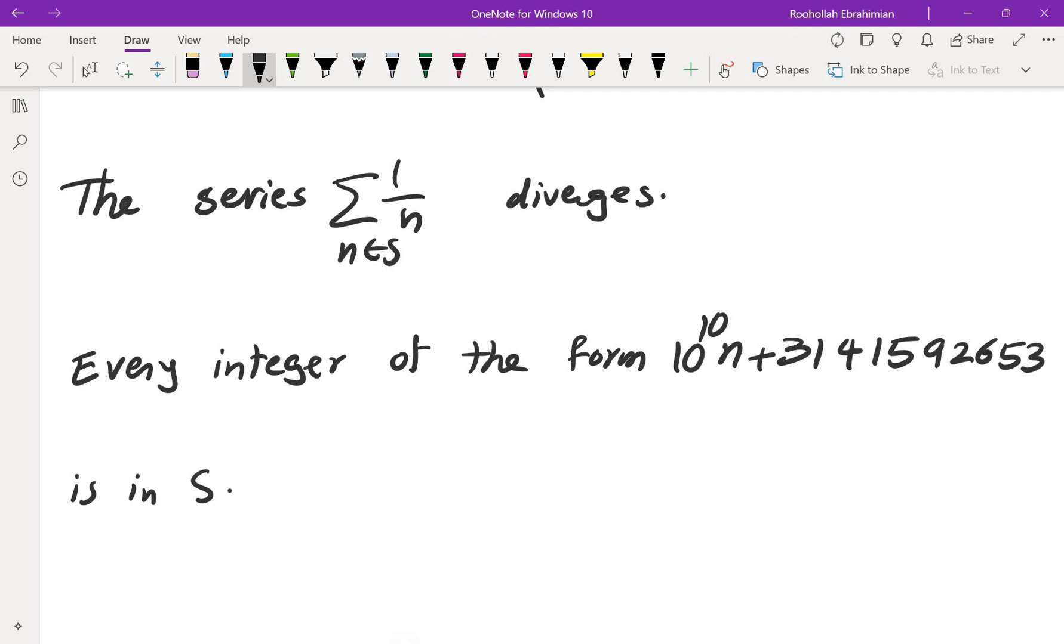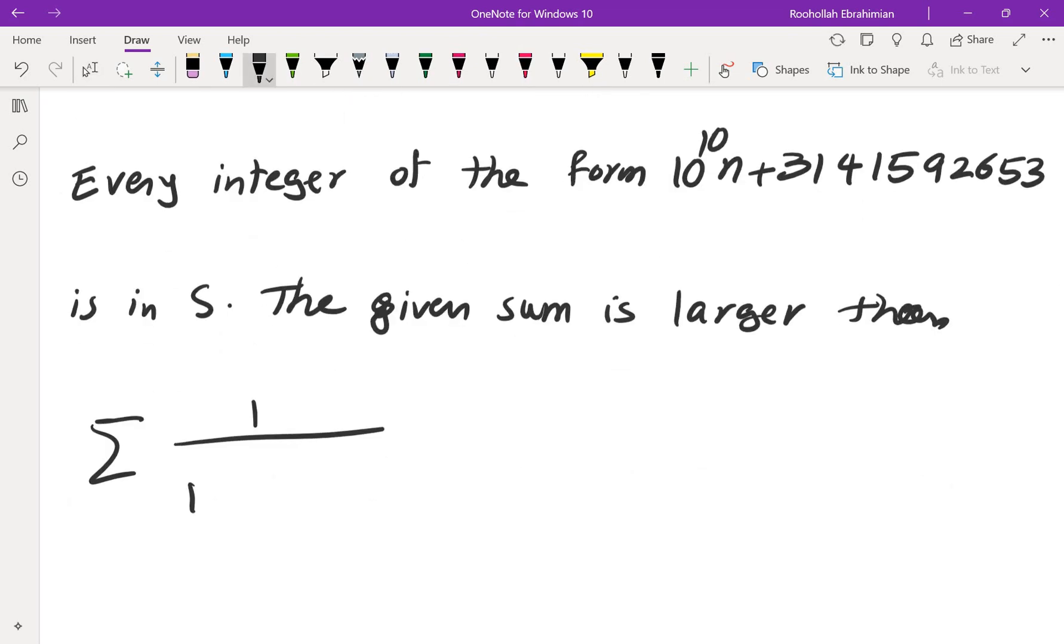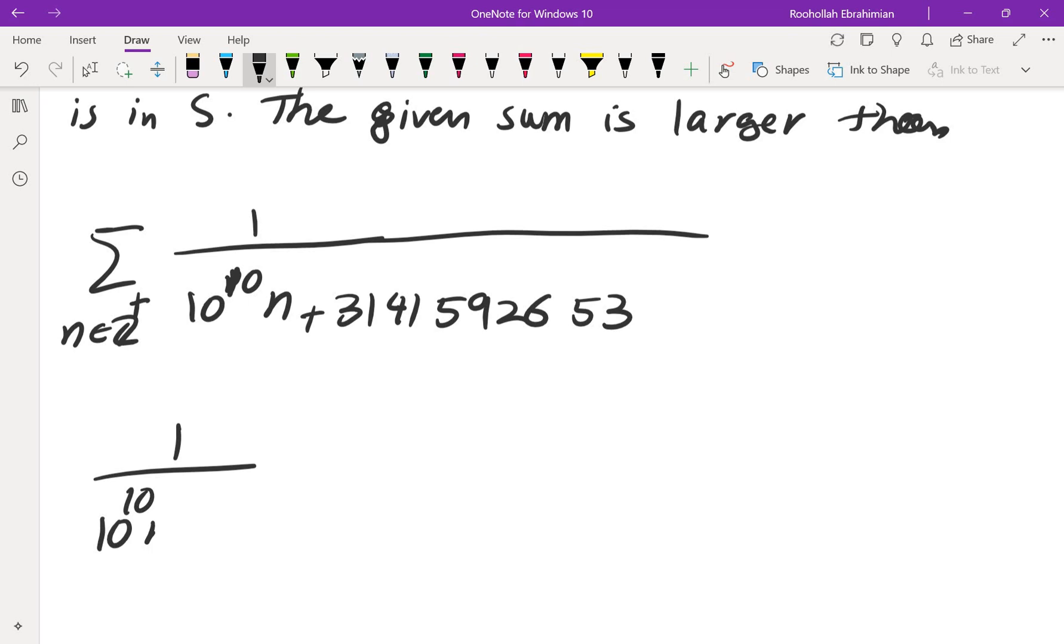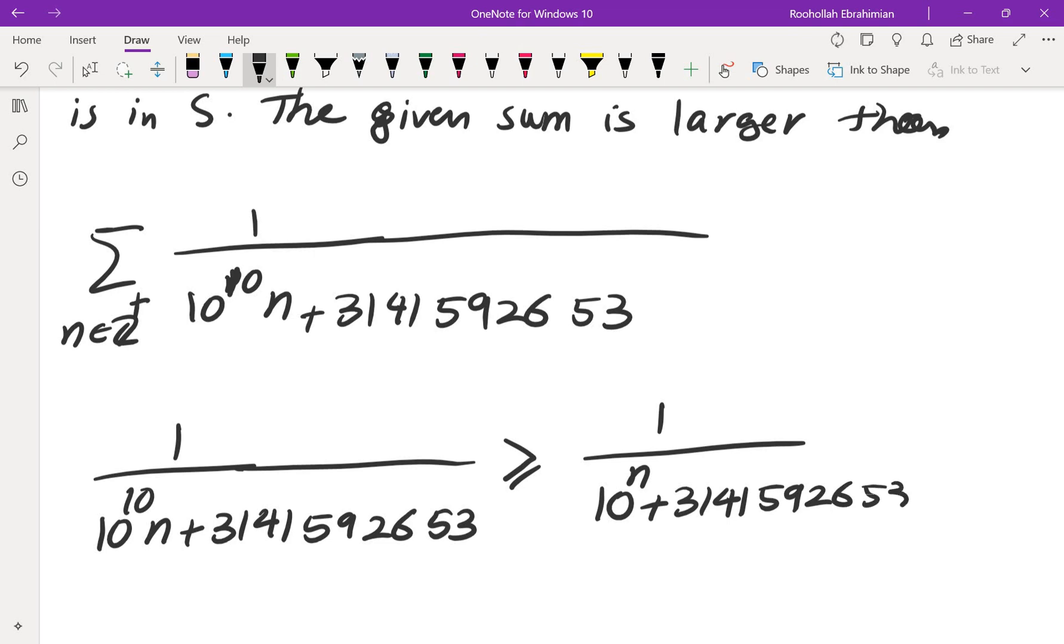So that means the given sum is larger than the sum of 1 over (10^10 × n + 3141592653), where n is a positive integer. But this one diverges. If you look at 1 over (10^10 × n + 3141592653), this is going to be greater than or equal to 1 over ((10^10 + 3141592653) × n).